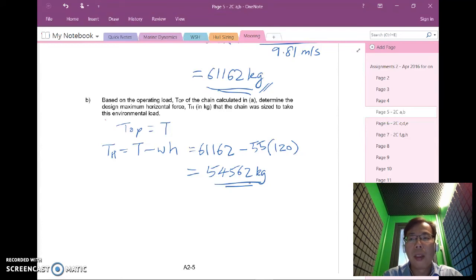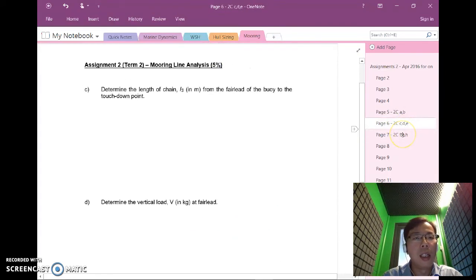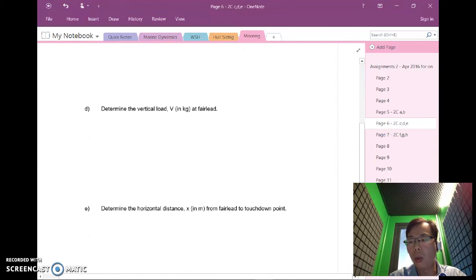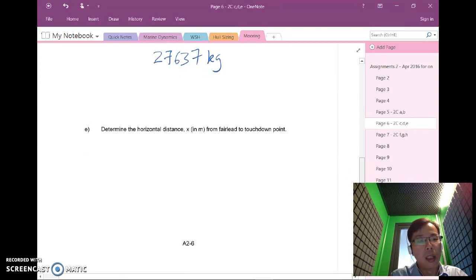Let's look at part c, d and e together. For part c you'll be required to use the various values to substitute into the equation. This will be done as an exercise on your own. I'll provide you the final answer which is 502.5 meters. For vertical load, again we'll use the given formula. I'll provide you the final answer which is 27637 kilograms. For the horizontal distance x this is 483 meters. Please do it at your own time.